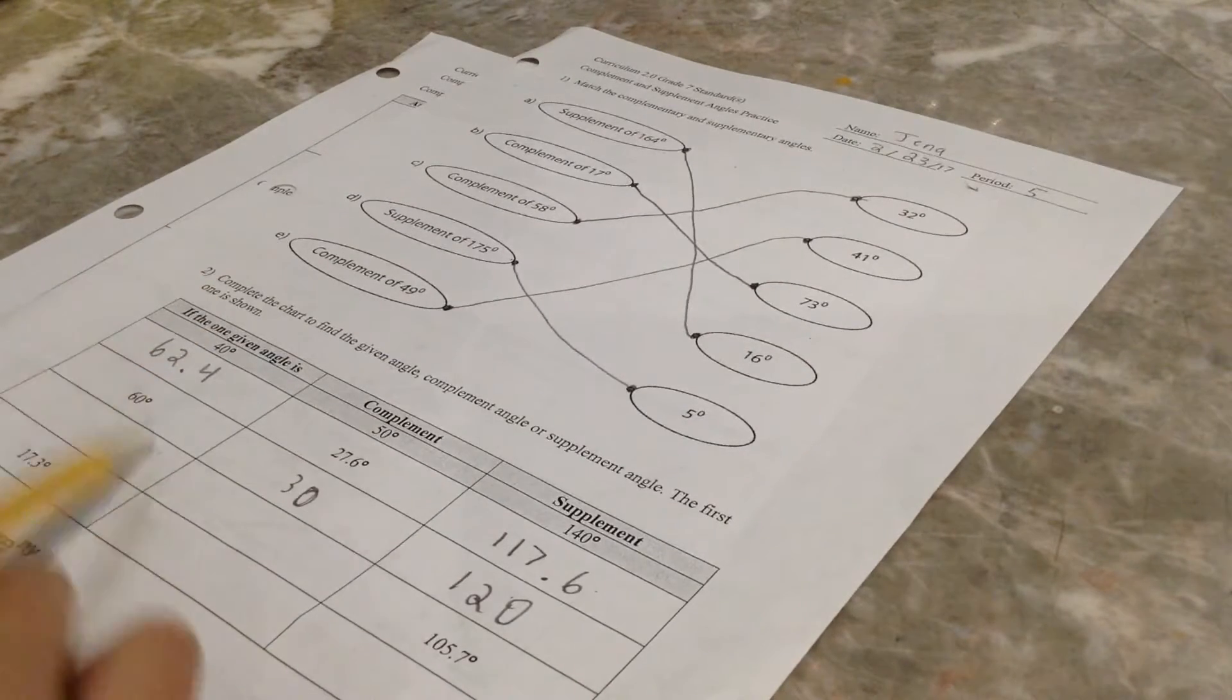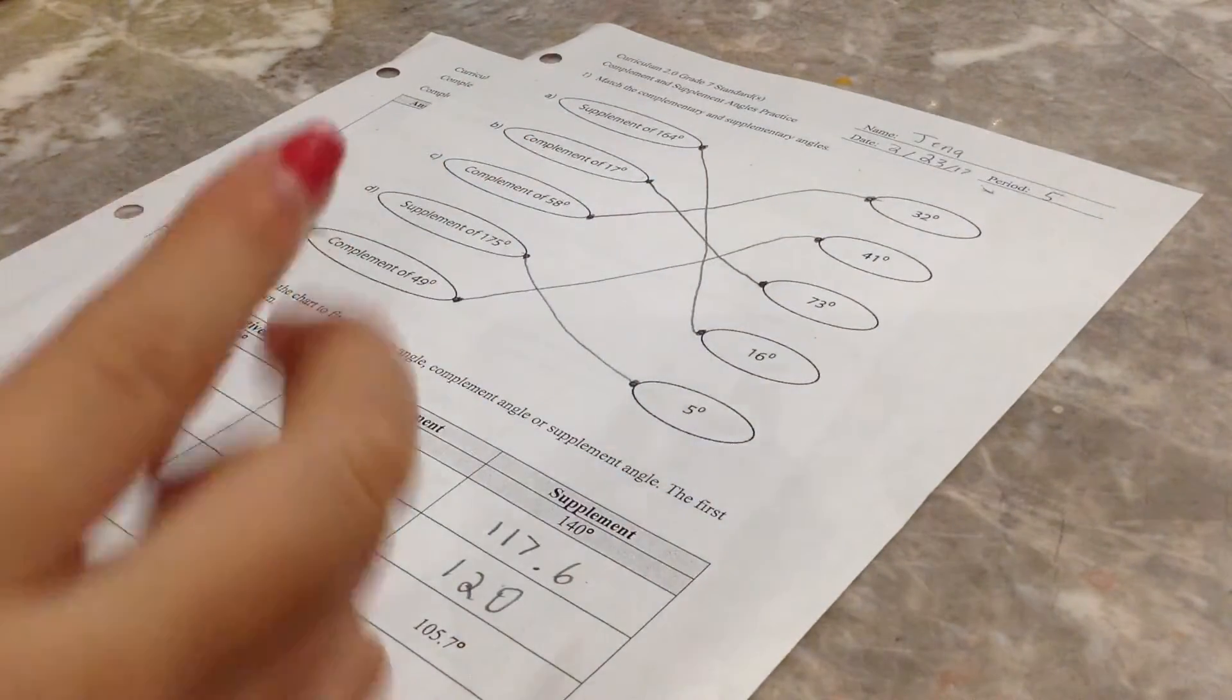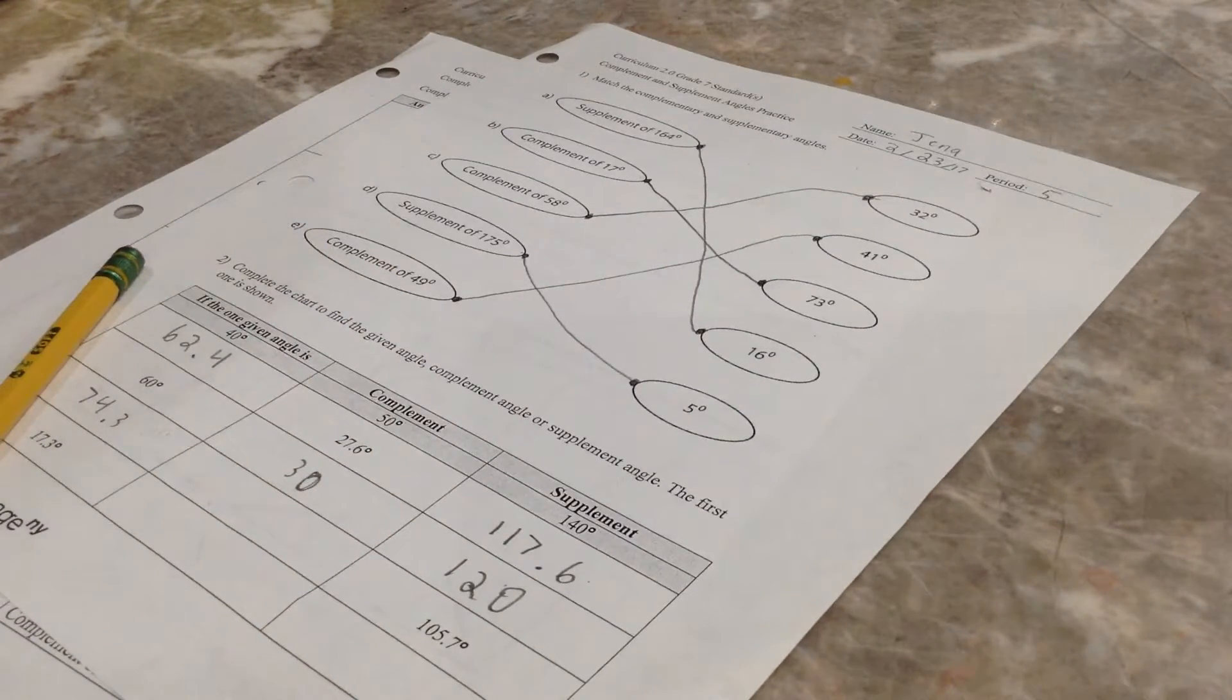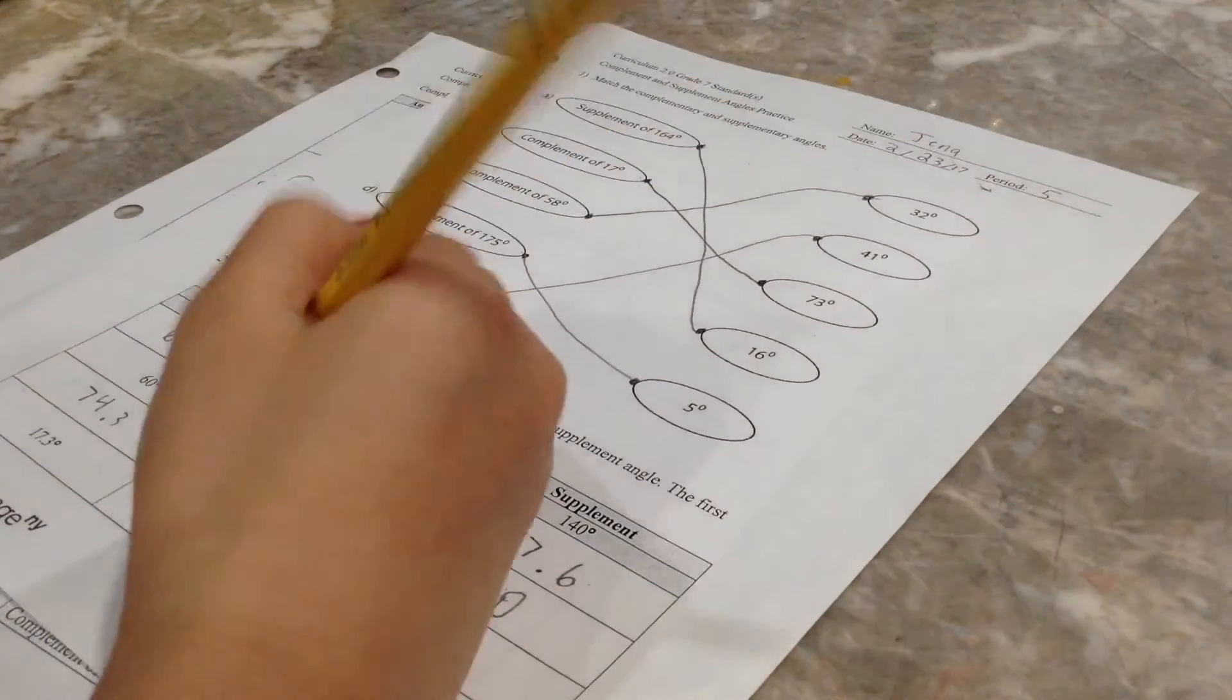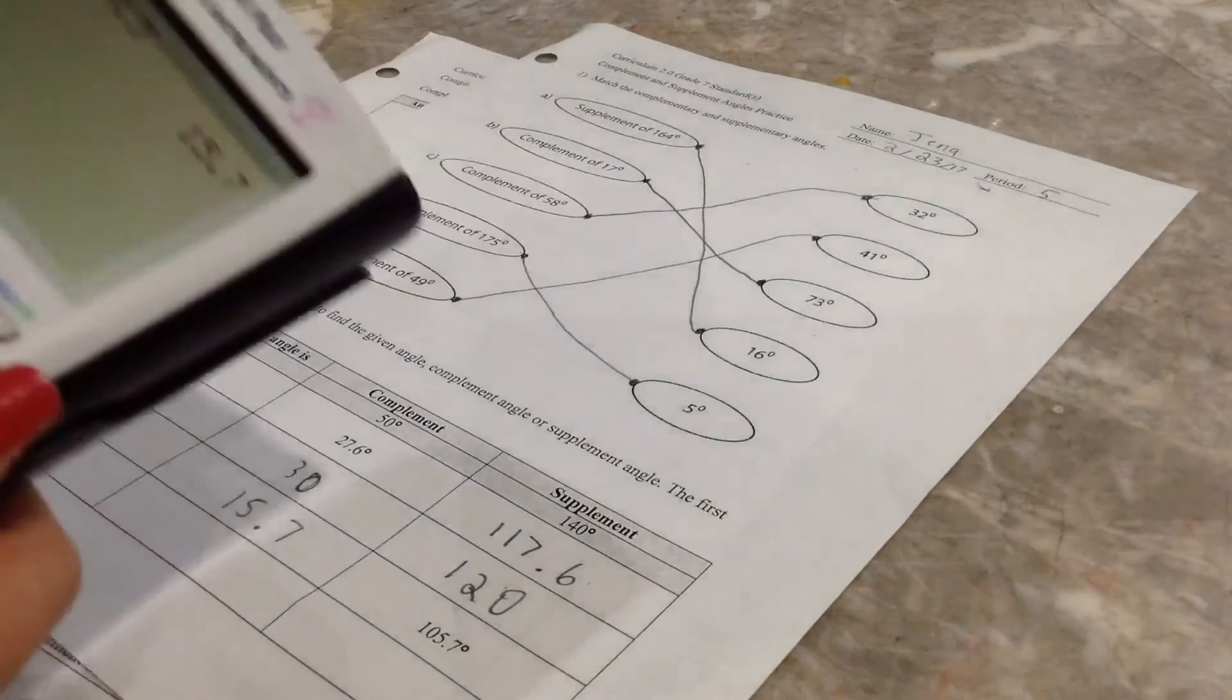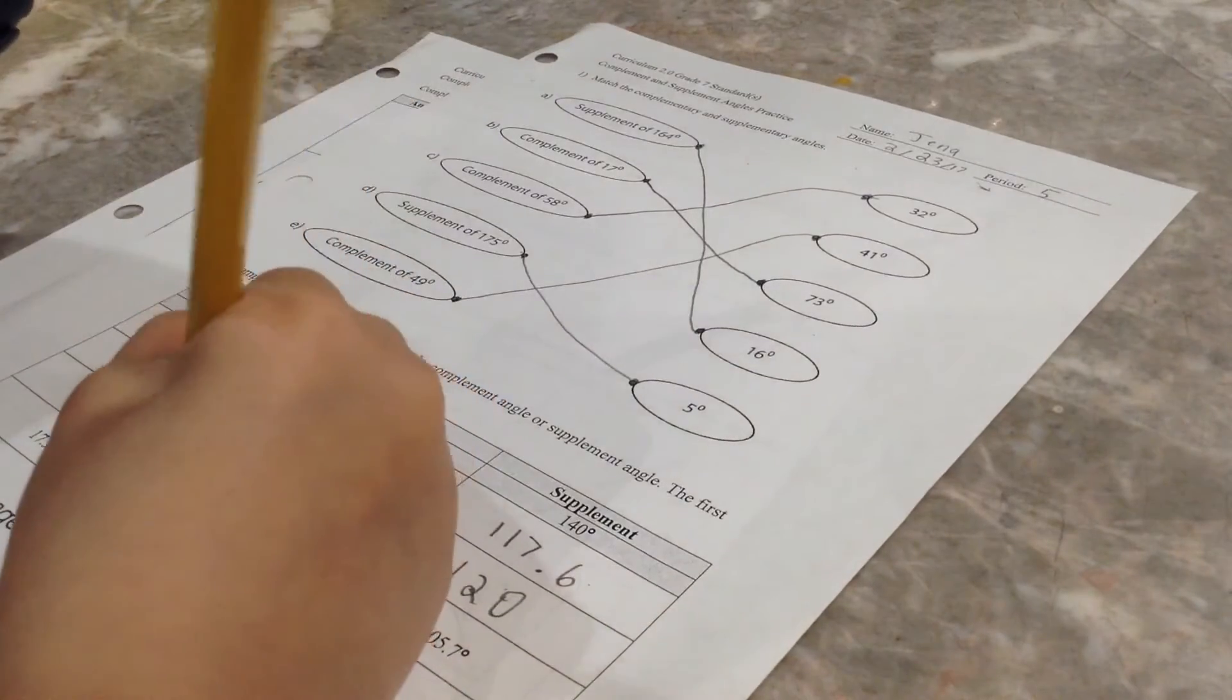And let's see. Let's start with... Oh, 105. Okay. 180, subtracted by 105.7 equals 74.3. And then 90, subtracted by 74.3 equals 15.7. And I'm just going to complete this first page, and then I'll stop the video. So... The next one is... Let's start... 90, subtracted by 17.3 equals 72.7.